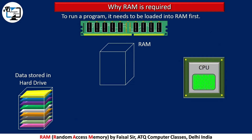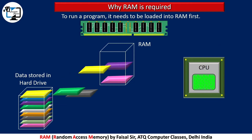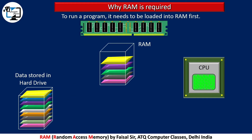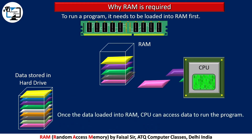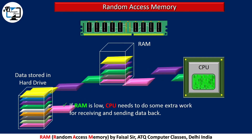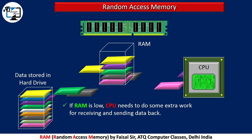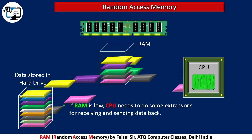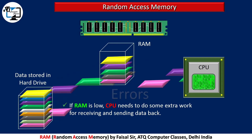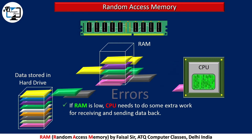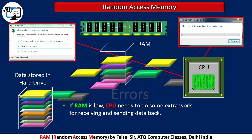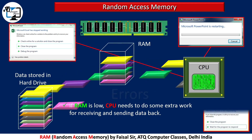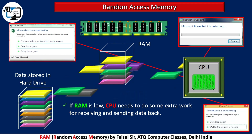To run a program, it needs to be loaded into RAM first. Once the data is loaded into RAM, the CPU can access it to run the program. If RAM is low, the CPU needs to do extra work receiving and sending data, which can cause errors like a program restarting, stopping, or not responding.